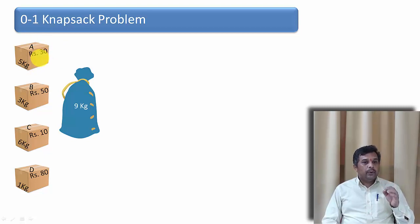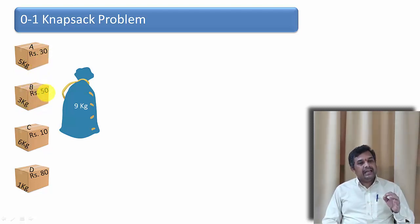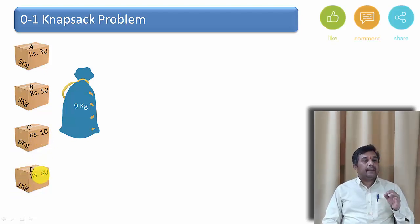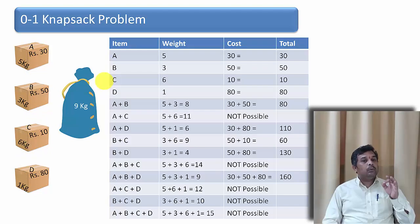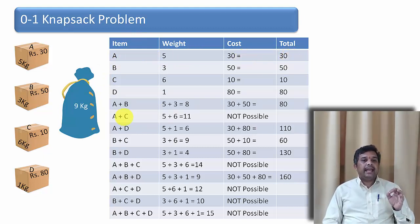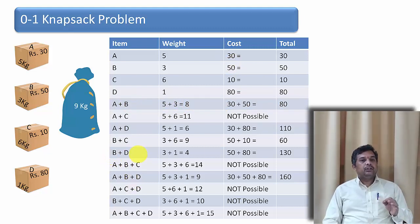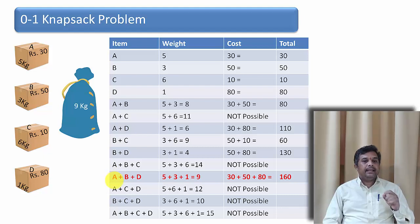For example: object A has weight 5 kg and price 30 rupees; object B has weight 3 kg and price 50 rupees; object C has weight 6 kg and cost 10 rupees; object D has weight 1 kg and cost 80 rupees. The capacity of the knapsack is 9 kg. If I select A and B, the weight is 8 kg and cost is 80. If I select B and D, the weight is 4 kg and cost is 130. If I select A, B and D, the weight is 9 kg and the maximum profit we can earn is 160.